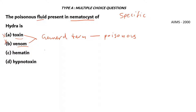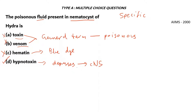Option C, hematin, is a blue dye from other creatures used for coloring, so it's also incorrect. The right answer is option D, hypnotoxin. This toxin depresses the activity of the central nervous system. So the person who gets stung by the nematocyst in hydra will have their central nervous system depressed due to hypnotoxin.